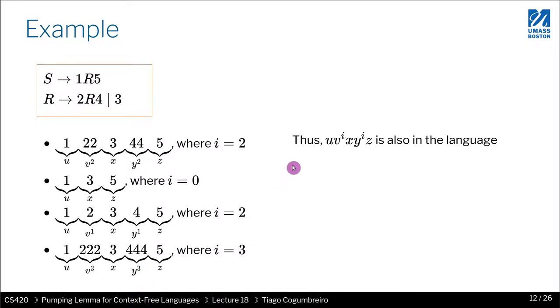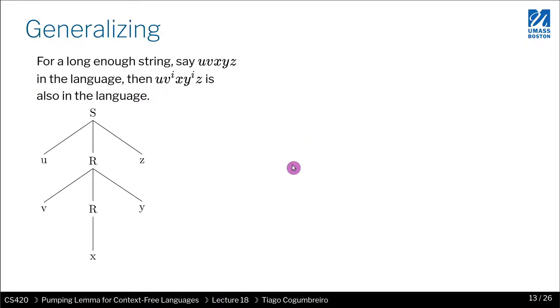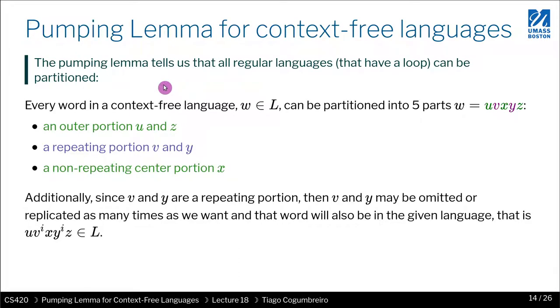So the intuition is basically this one. So if we generalize it, we could have whole strings here that would be replicated n times. So v is a string and not just a character, it's basically what this slide is saying.